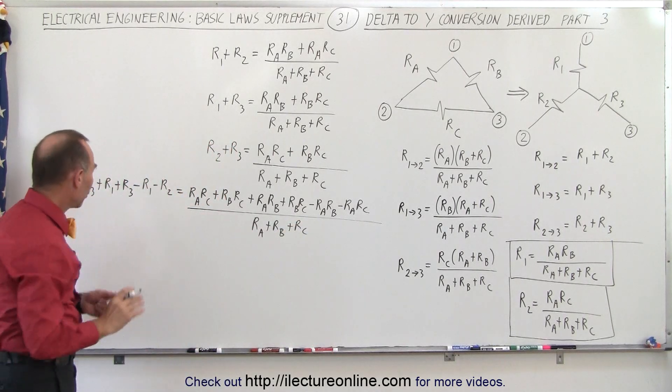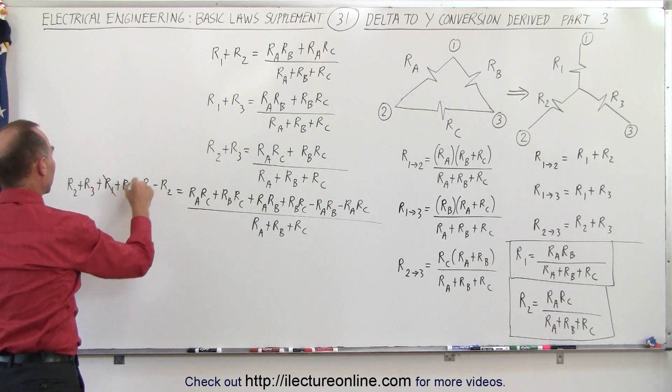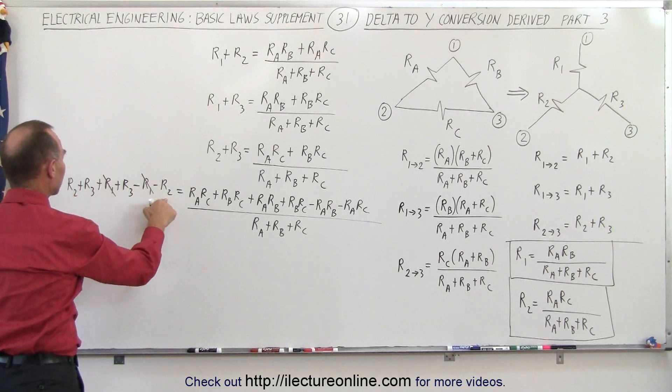So on the left side what cancels out? We have an R1 and negative R1 so they cancel, we have an R2 and a negative R2 so they cancel.